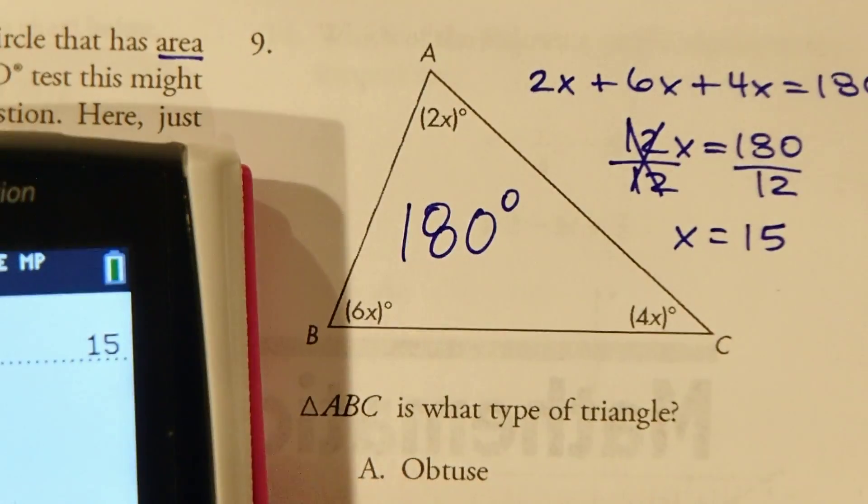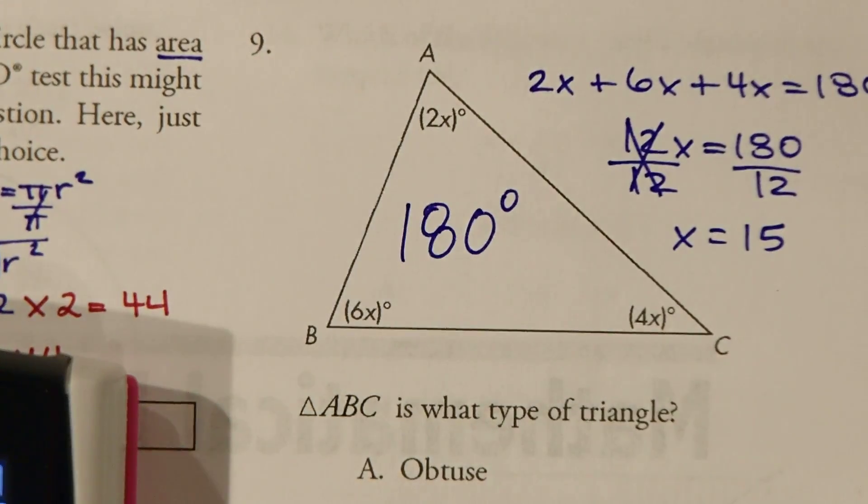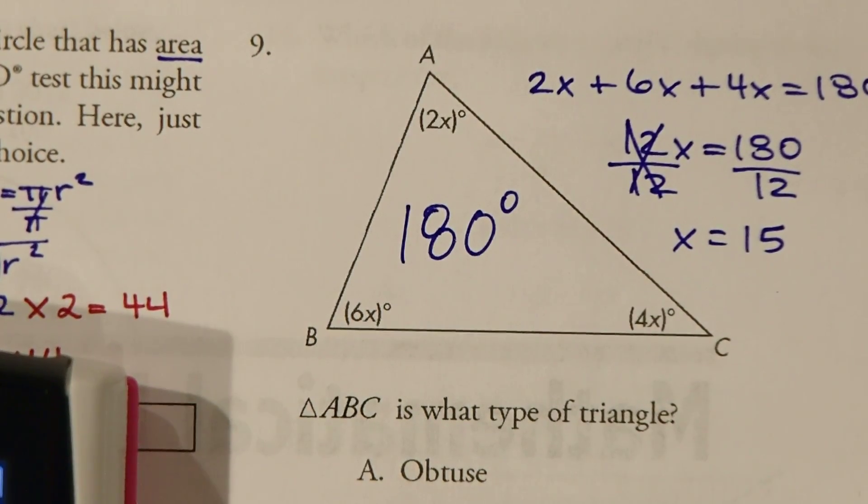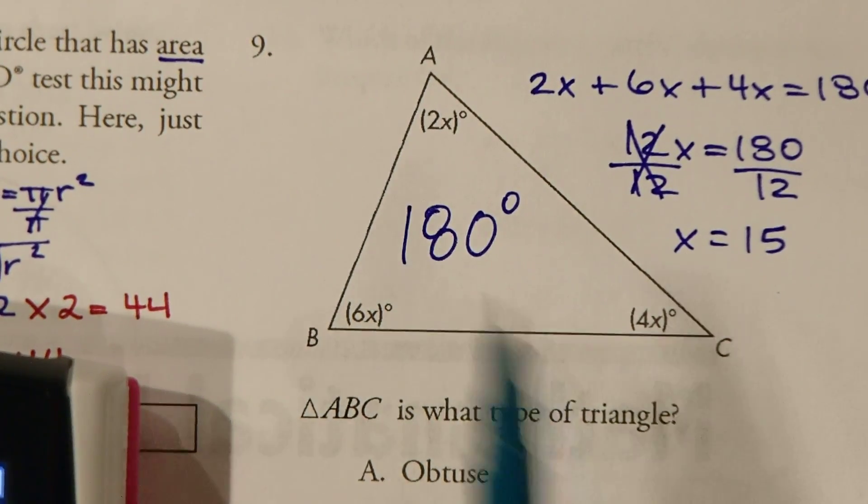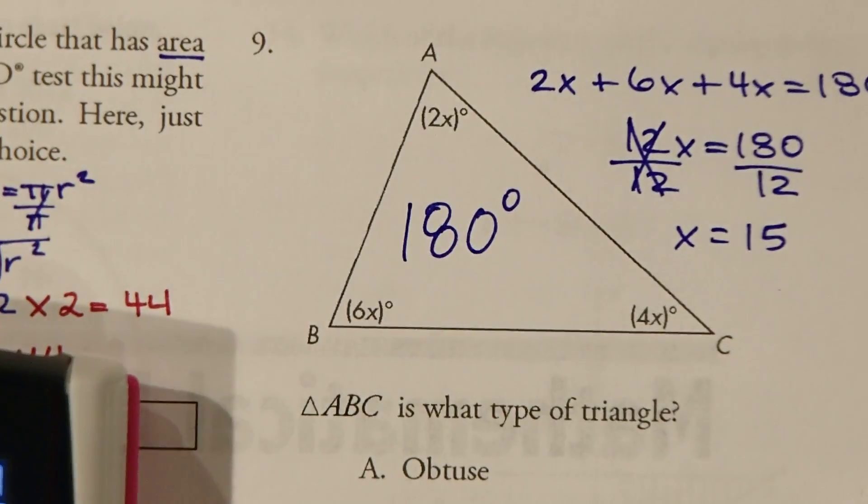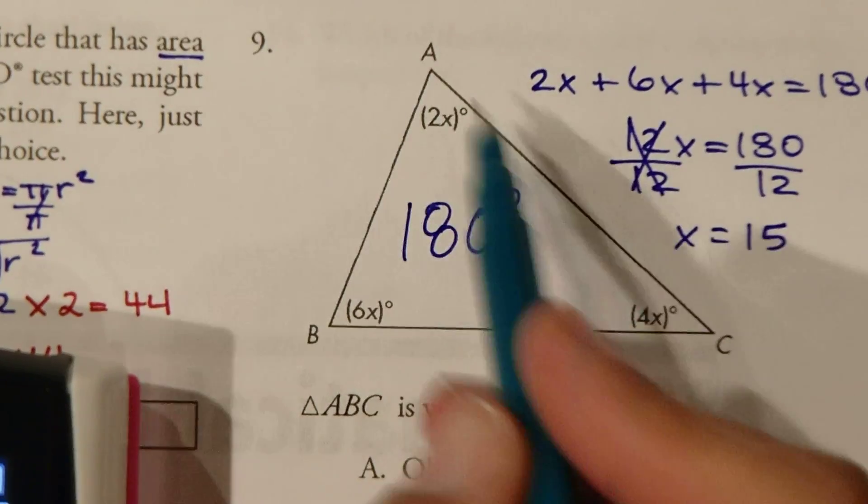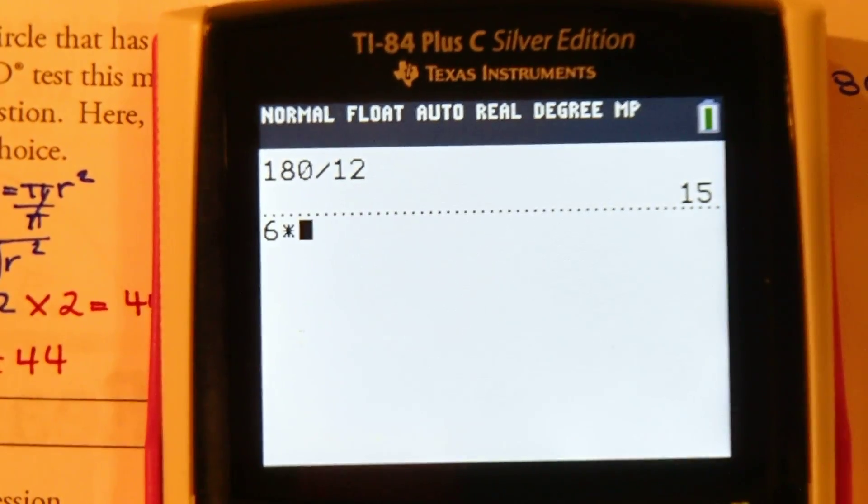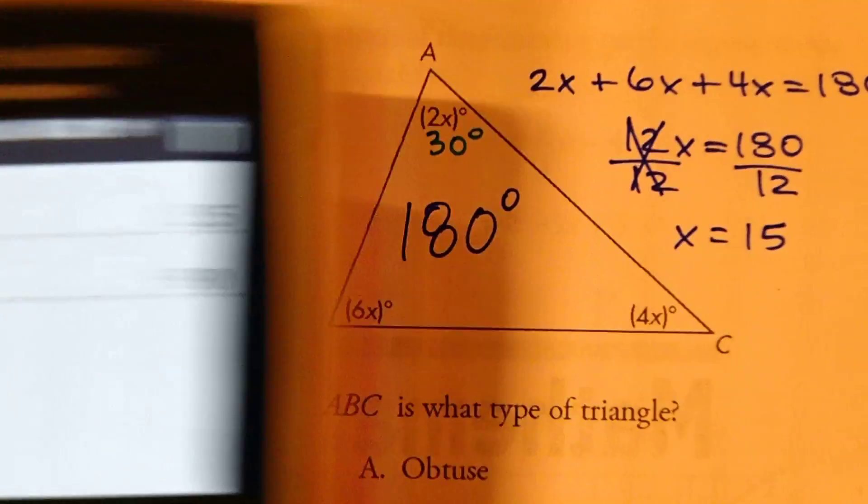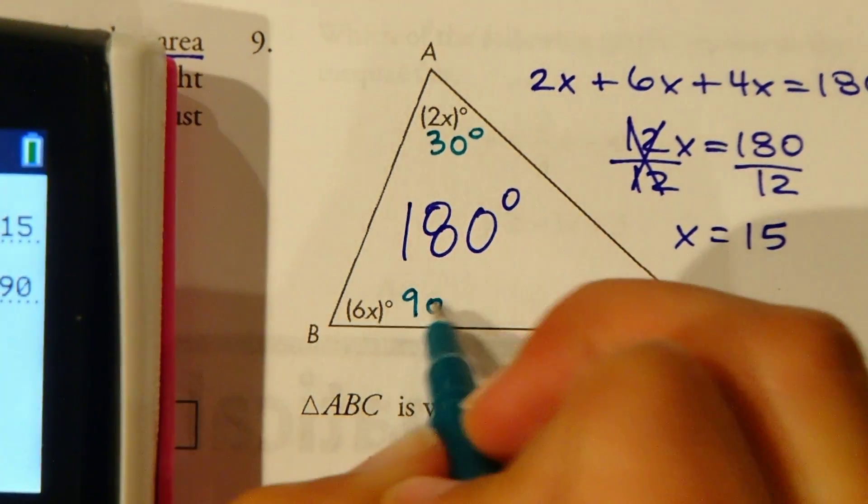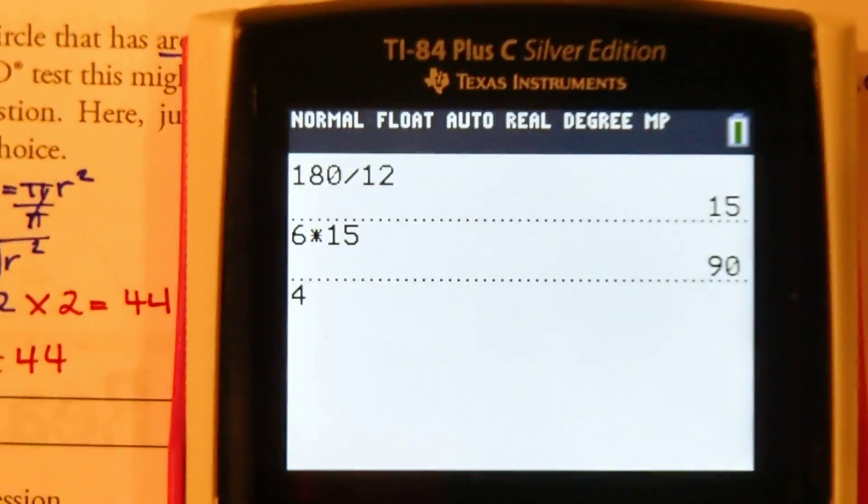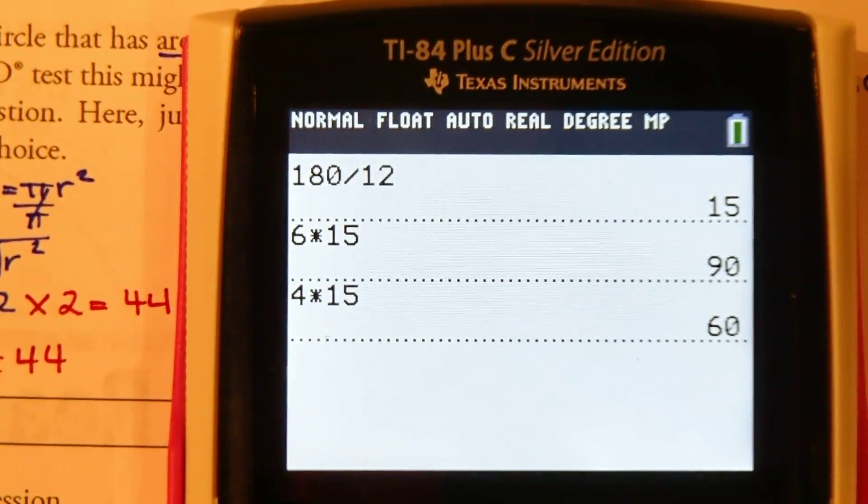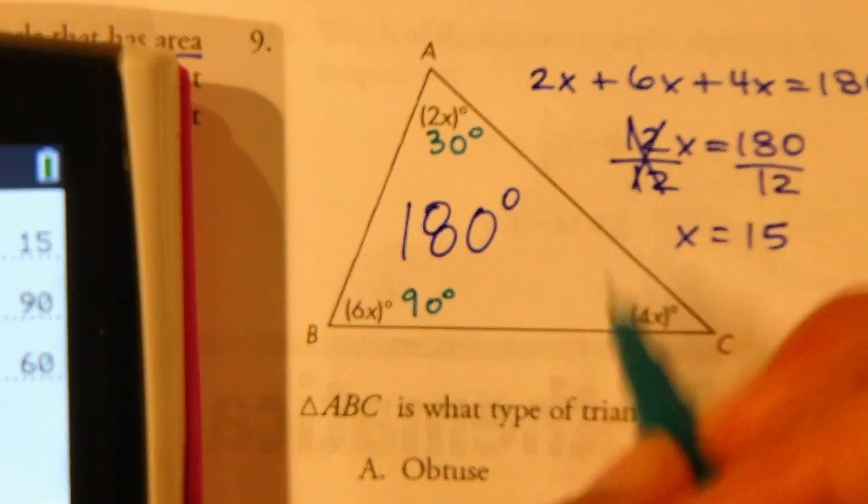I'm going to go back and plug in each one of these angle measures so I can get an accurate reading of what each angle measure is, because a lot of times these triangles are not drawn to scale, so never make any assumptions. So 2x, 2 times 15 is 30. That's a 30 degree angle. 6 times 15, let's just double check, 6 times 15 is 90. So this angle is 90 right here. And 4 times 15 is 60. So this one is 60 here.